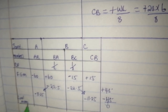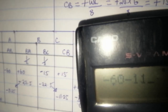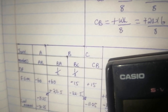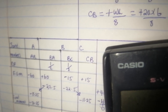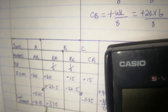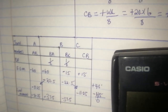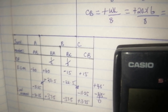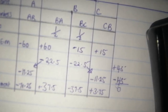We now calculate the final moments by summing all values in each column. For AB: negative 60 minus 11.25 equals negative 71.25. For BA: 60 minus 22.5 equals positive 37.5. For BC: negative 37.5. For CB: 15 minus 11.25 equals positive 3.75. Our answers are balanced, confirming correctness.